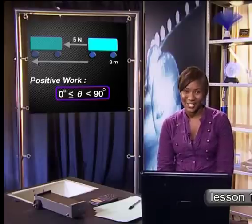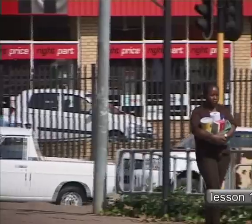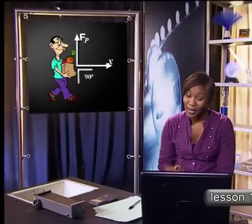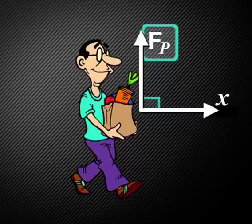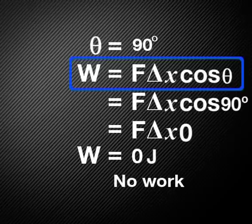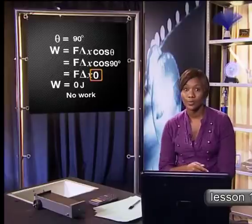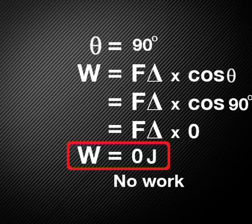Now, have a look at another example. A woman is carrying her groceries home. Do you think there is any work done in this situation? There is a force acting on the bag and the bag is moving, so it seems like work is being done — but unfortunately that is not the correct answer. The force acting on the bag, labelled FP, is perpendicular — in other words, at a 90-degree angle to the displacement of the bag. If we use the work equation force times displacement times cosine theta and substitute theta with 90 degrees, cosine 90 degrees is zero. So where the force is perpendicular to the displacement, we always multiply by zero and the answer is always zero — no work is done.